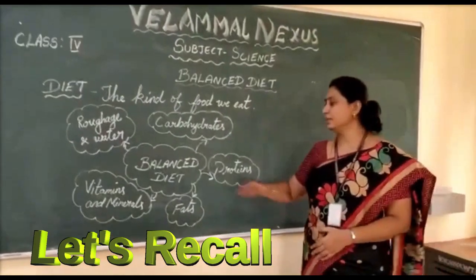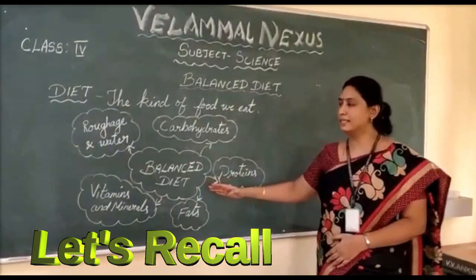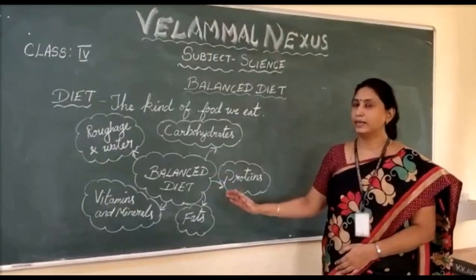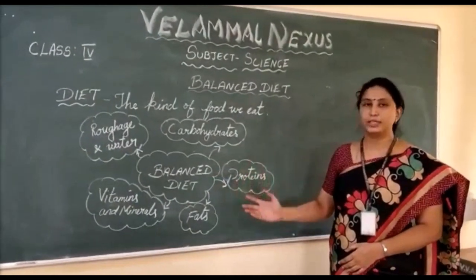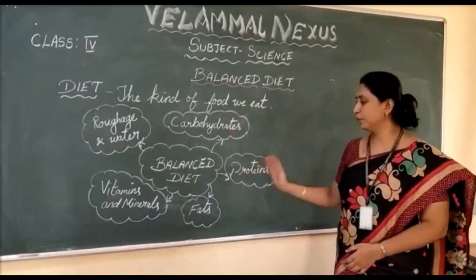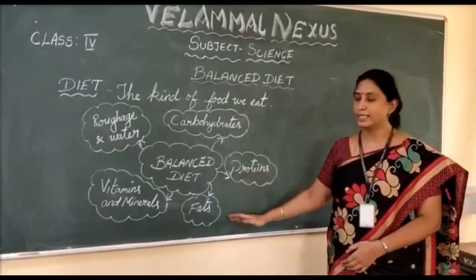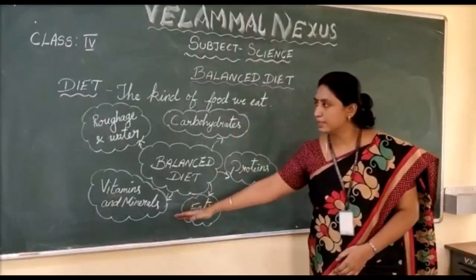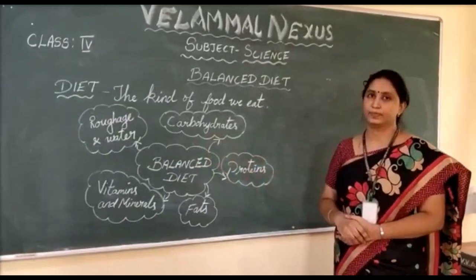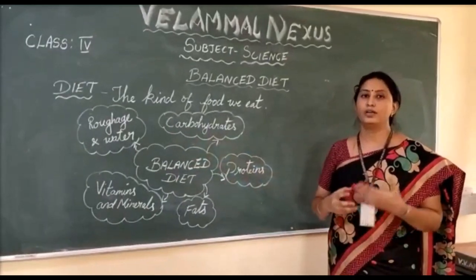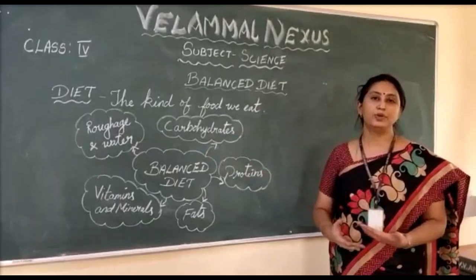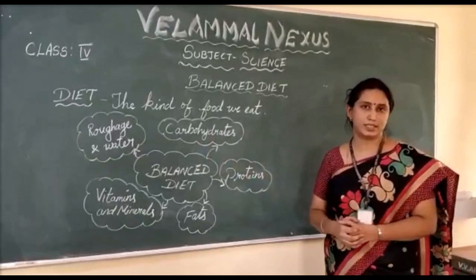So we have learnt about balanced diet. A balanced diet is nothing but it should contain all the nutrients in the right amount — that is carbohydrates, proteins, fats, vitamins and minerals, roughage and water. Hope you all follow the balanced diet and take it to improve your immune system.